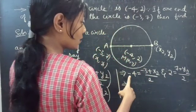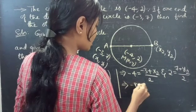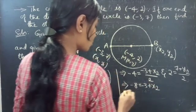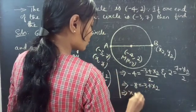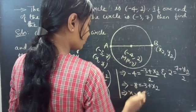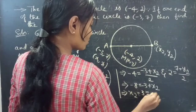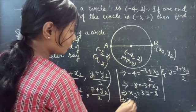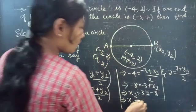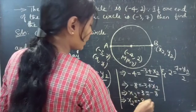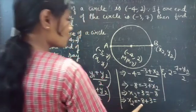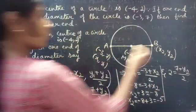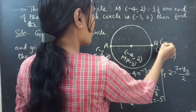From the x-component: minus 4 equals minus 3 plus x2 by 2, so minus 4 times 2 gives minus 8 equals minus 3 plus x2. Rearranging: x2 equals minus 8 plus 3, so x2 equals minus 5.